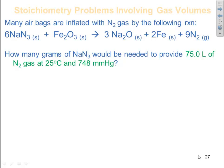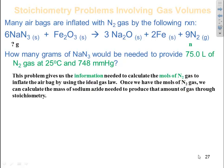Here's another example. Many air bags are inflated with nitrogen gas by the following reaction. Sodium azide plus iron(III) oxide forms sodium oxide, iron, and nitrogen gas. The actual nitrogen gas is what blows up the bag. I want to know how many grams of sodium azide would be needed to provide 75 liters of nitrogen gas at 25 degrees C and 748 millimeters of mercury. So what we're looking for here is how many grams of sodium azide do I need to produce so many moles of nitrogen gas?